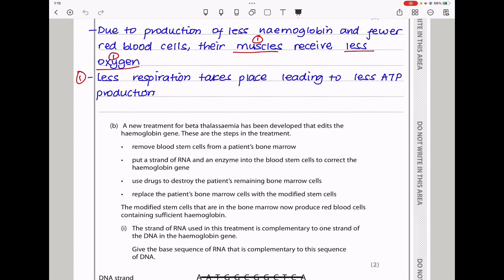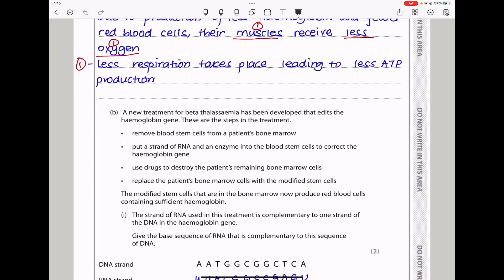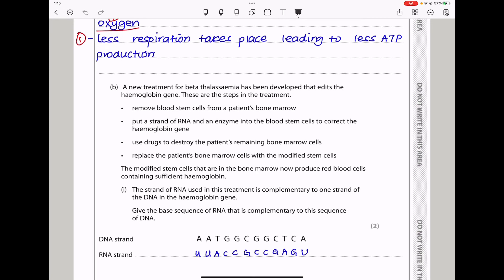The next part says, a new treatment for beta thalassemia has been developed that edits the hemoglobin gene. These are the steps in the treatment. Remove blood stem cells from a patient's bone marrow. Put a strand of RNA and an enzyme into the blood stem cells to correct the hemoglobin gene. Then use drugs to destroy the patient's remaining bone marrow cells. Replace the patient's bone marrow cells with the modified stem cells.